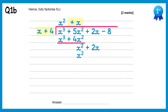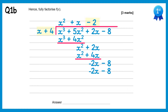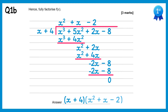x times x is x squared and x times 4 is plus 4x. Then subtract these — the x squares will cancel and 2x take 4x is negative 2x. Bring down the final term and then do negative 2x divided by x which is negative 2, multiply this back through. It gives you negative 2x subtract 8, subtract these and you get 0. So we've found that this can be expressed as x plus 4 times the quadratic x squared plus x take away 2. But this quadratic can also factorise to x plus 2, x minus 1.